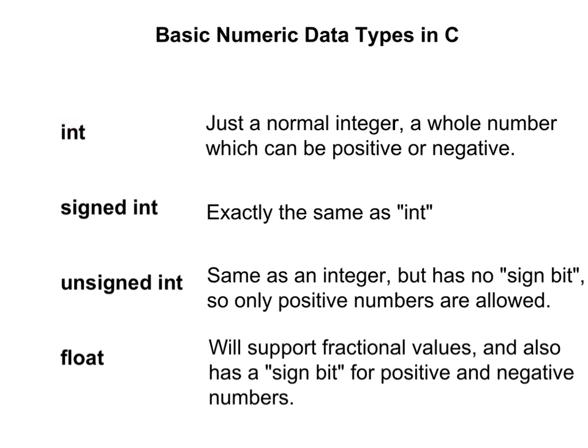First of all, you have int, which is short for integer, and this refers to a whole number which can be positive or negative. Signed int is the same thing as int. You have the choice of either a signed int or an unsigned int. If you write just int, that means signed int, which means it has a signed bit, so you can have positive or negative values. An unsigned int means that you don't have a signed bit, and therefore you can only represent positive numbers. Float will support fractional numbers and also has a signed bit, so it can be positive or negative. So if you needed to store a value like 7.31, you would use a float.